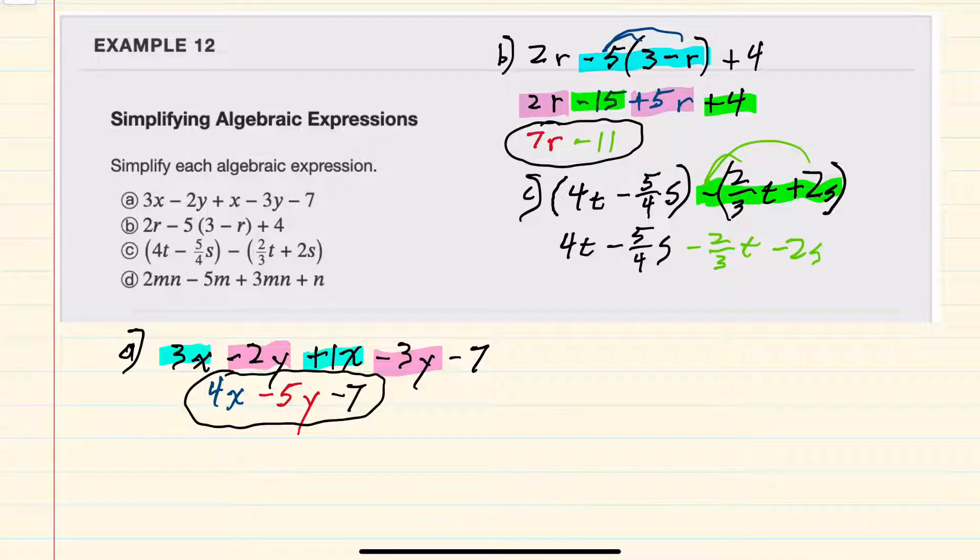Now that we have the parentheses removed, we can look for like terms to combine. And our 4t and minus 2 thirds t are like terms because they only have the variable t and a coefficient. To combine these, though, I will need to get a common denominator.